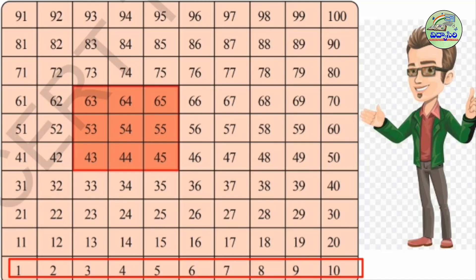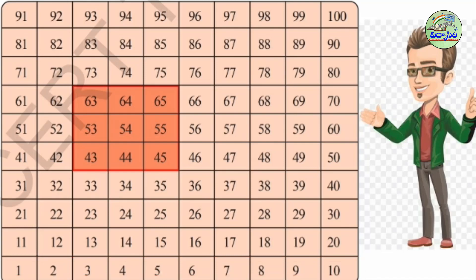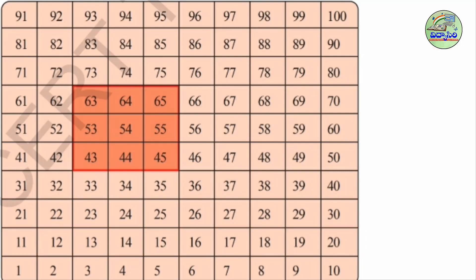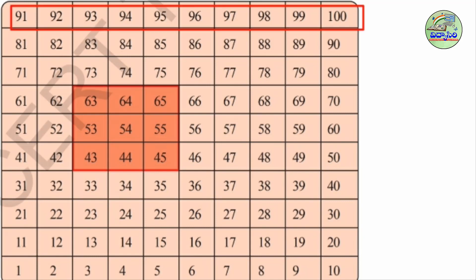Here, numbers 1 to 100 are arranged in order like this: 1, 2, 3, 4, 5, 6, 7, 8, 9, 10, then 11, 12, 13, 14, 15, 16, 17, 18, 19, 20 — and continuing in this order all the way up to 91, 92, 93, 94, 95, 96, 97, 98, 99, 100.